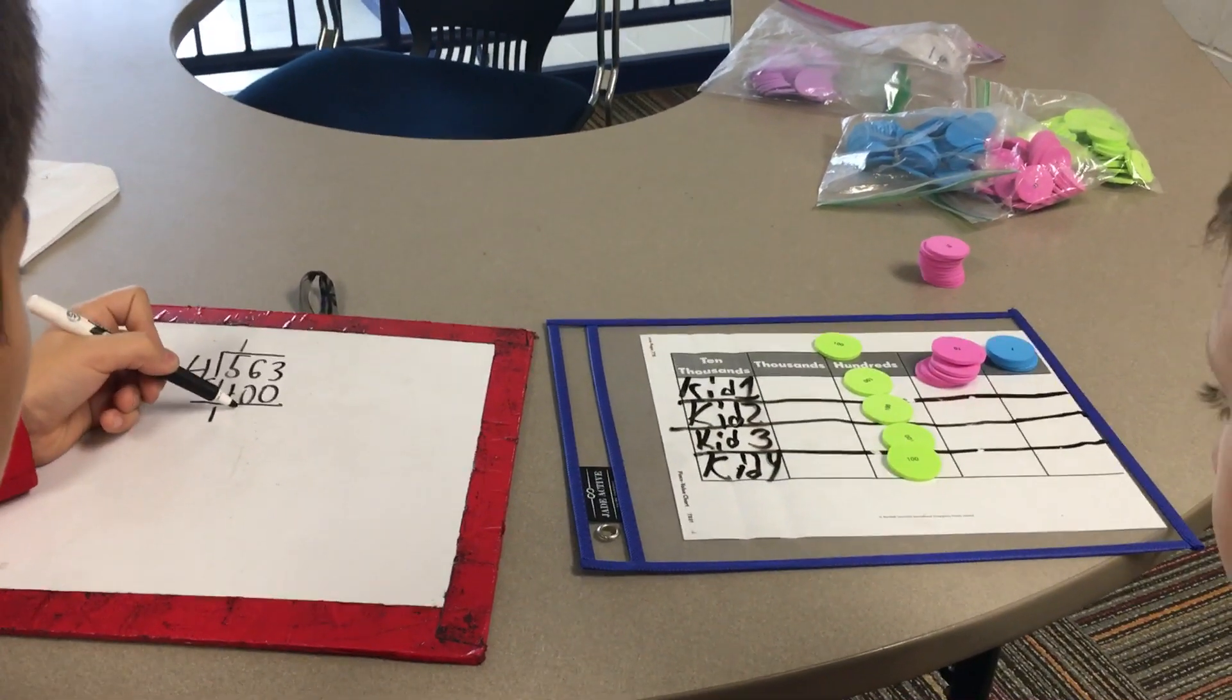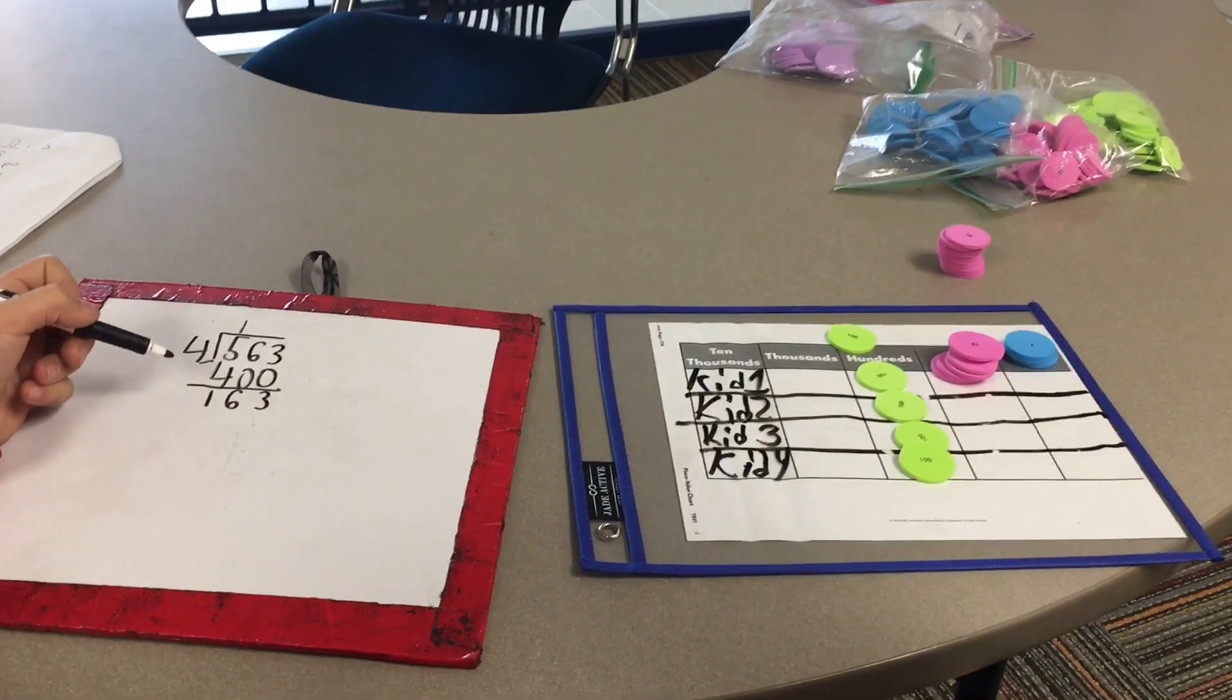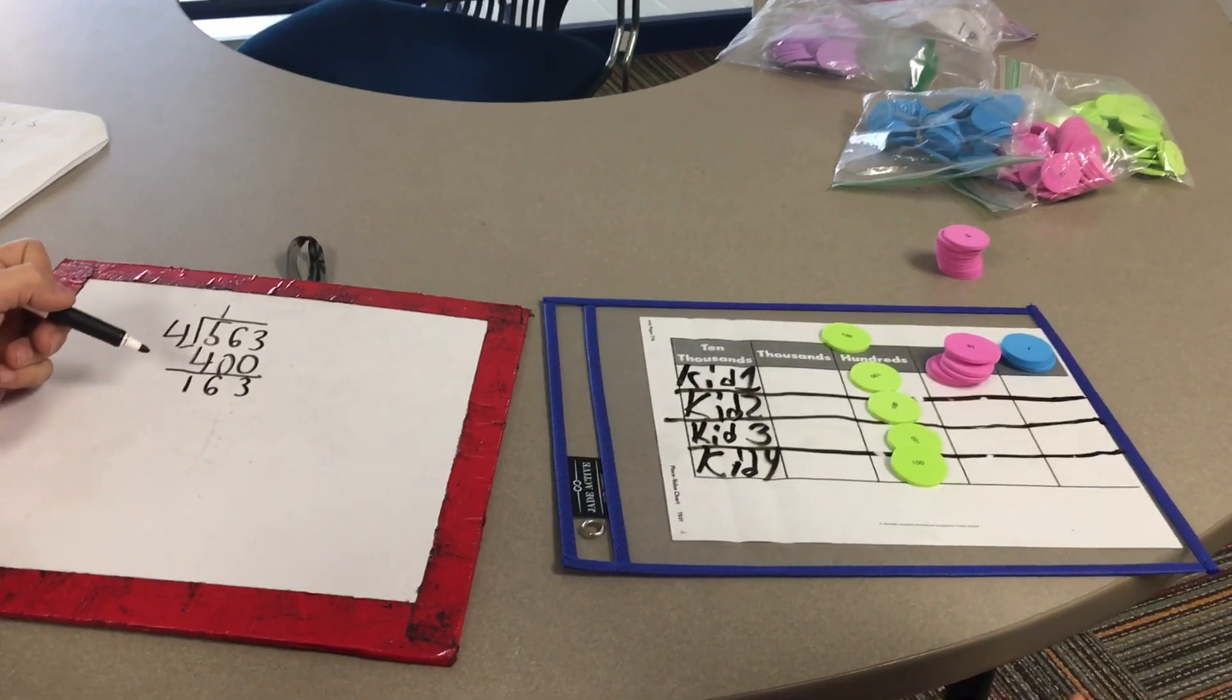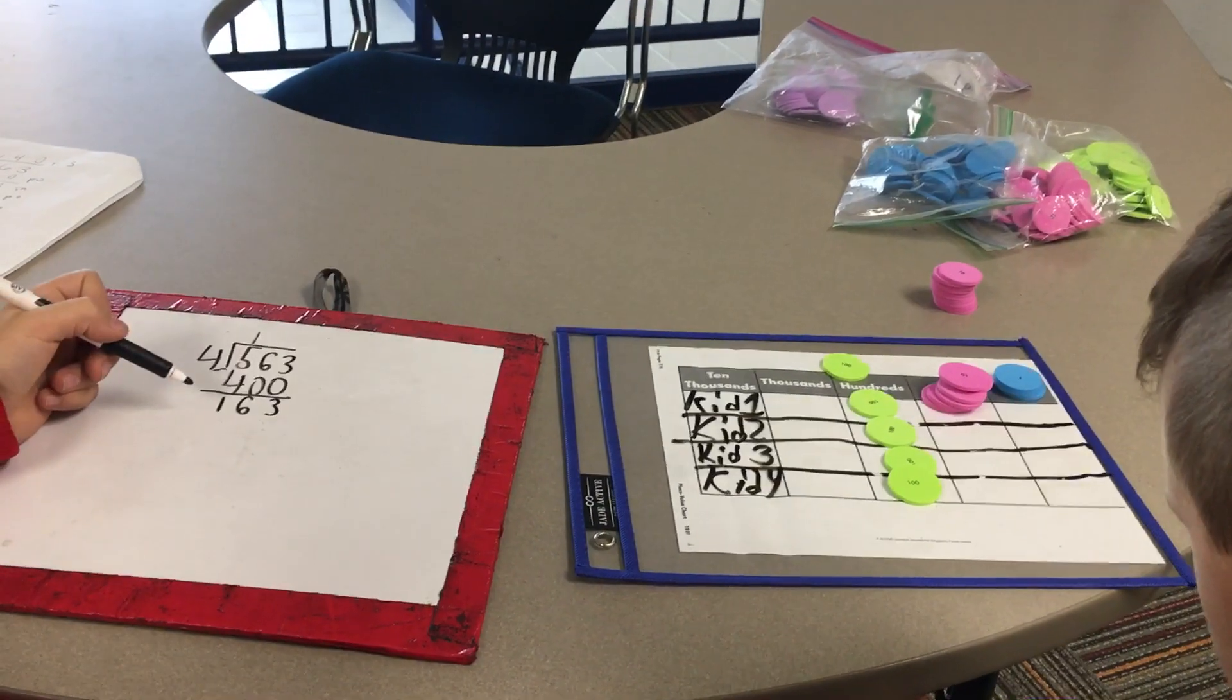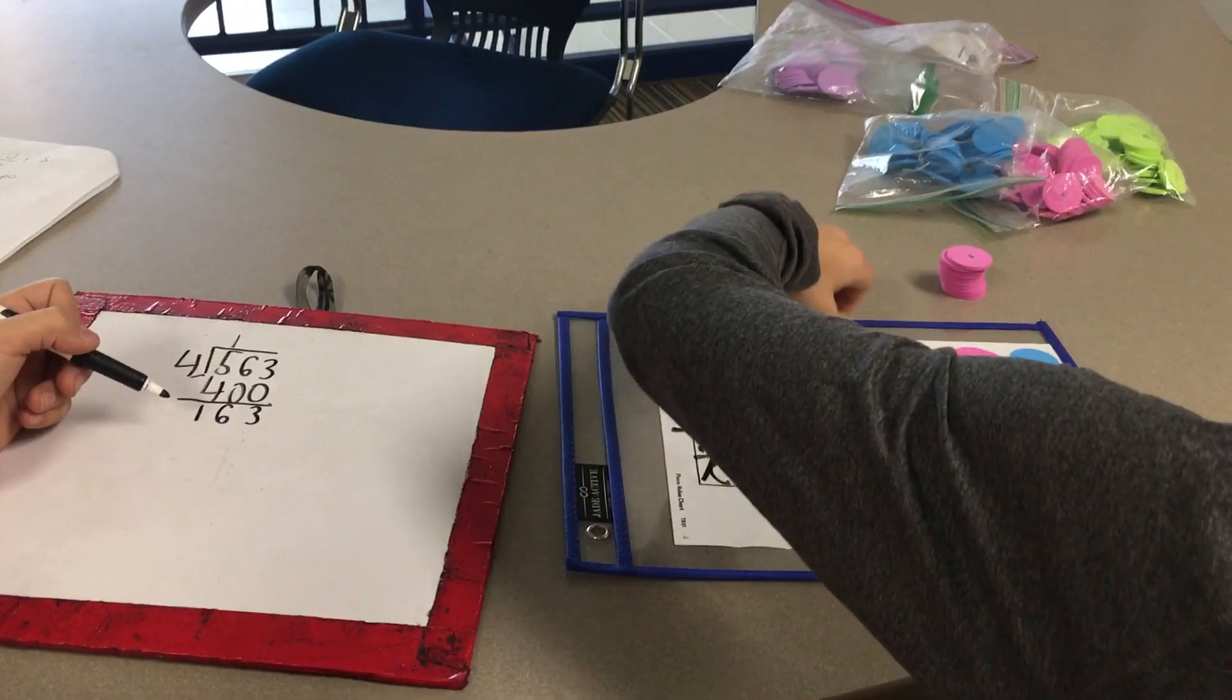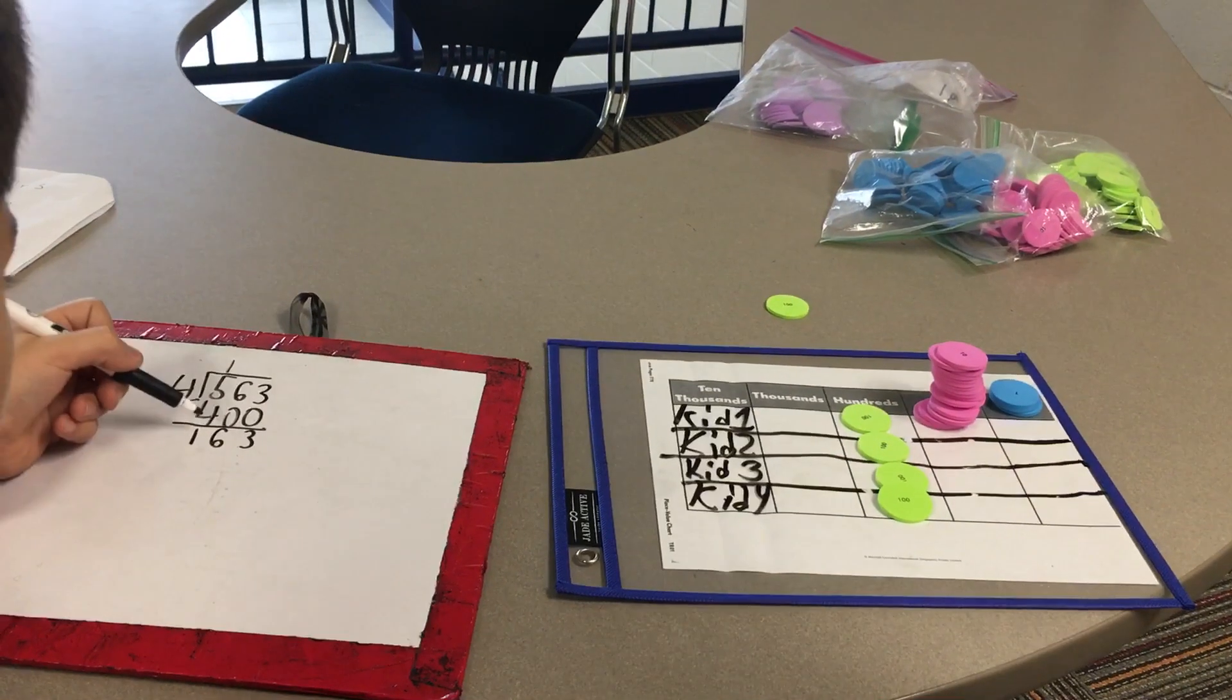There is 100, 6 tens, and 3 ones that still need to be passed out. Now we are ready to pass out the tens. But you can't just leave 100 pieces of candy sitting there. We need to trade in the 100 for tens chips, because 100 is equal to 10 tens.